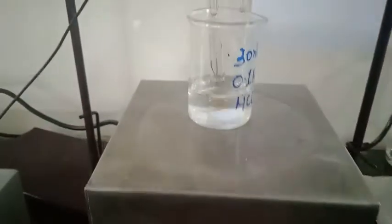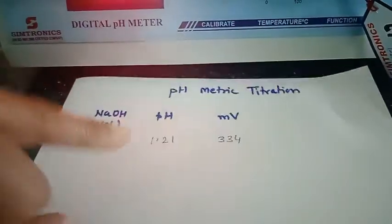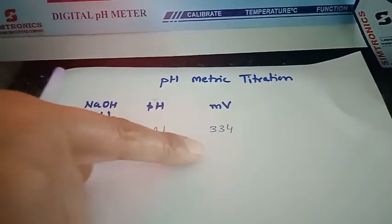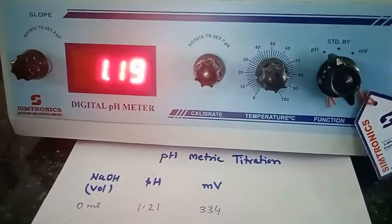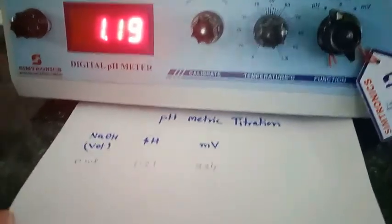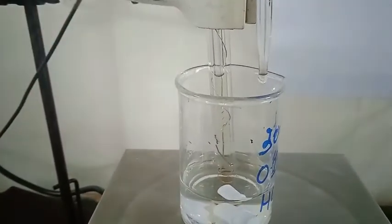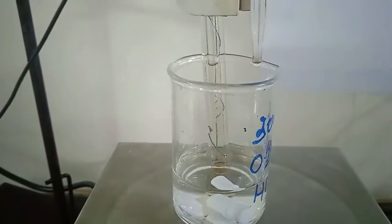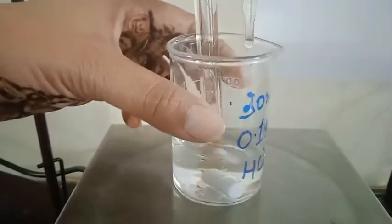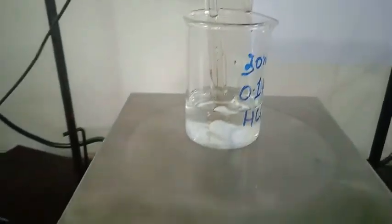Now I take 30 ml of the 0.1 normal HCl solution. For 0 ml — meaning before adding any NaOH — we take the initial pH and millivolts reading from the pH meter. Here you can see the electrode, and we are going to add NaOH solution from the burette. The setup is kept on a magnetic stirrer.